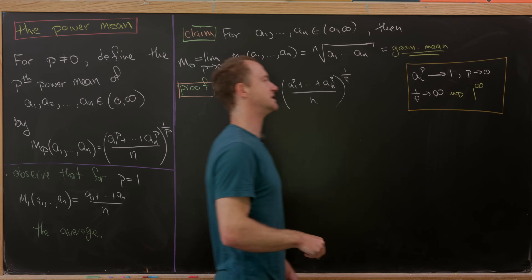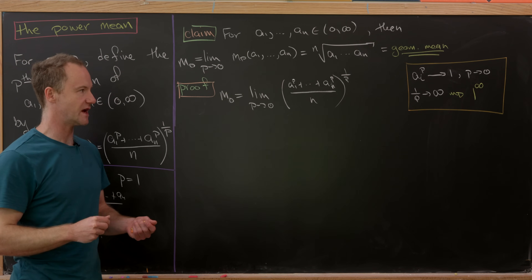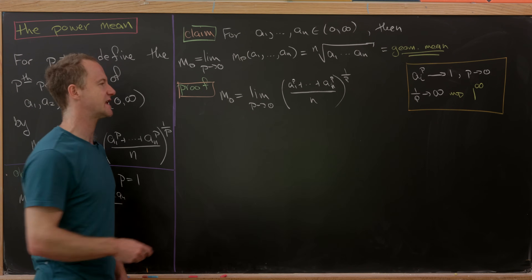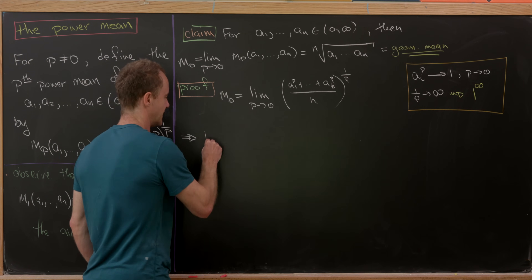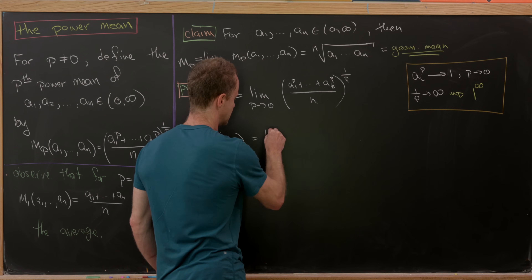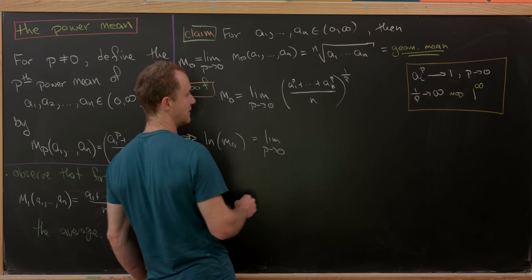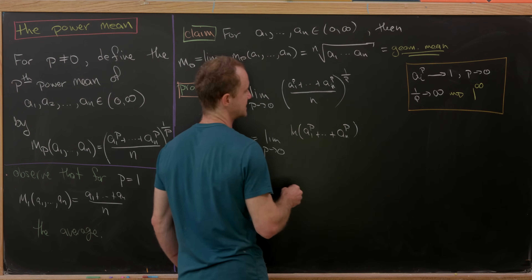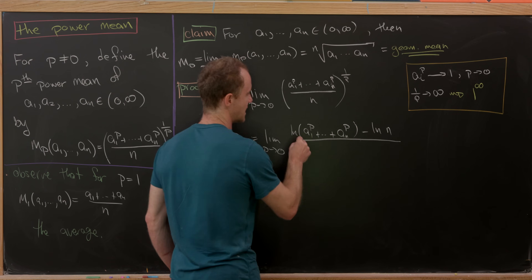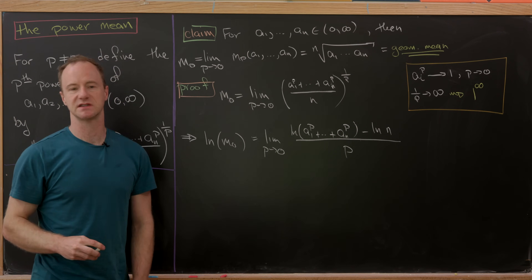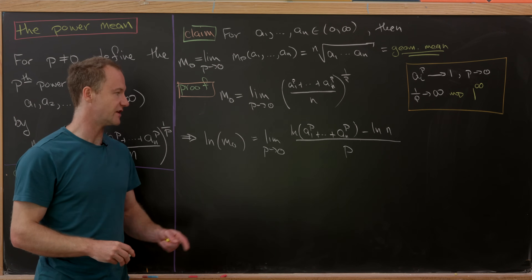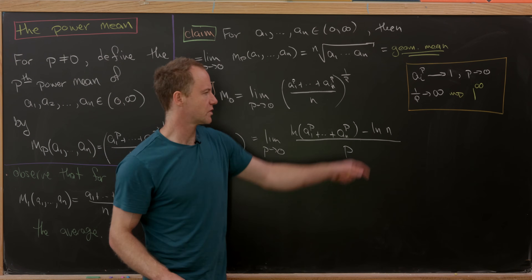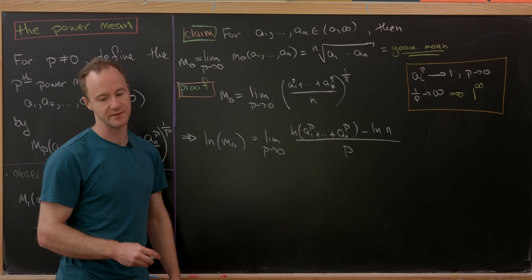The way to handle exponential indeterminate forms is by using L'Hôpital's rule after taking a logarithm. So we take the natural log: ln(m₀) = lim_{p→0} [ln(a₁^p + ... + aₙ^p) − ln(n)] / p, using logarithm rules. As p→0, the argument of the log goes to ln(n), and we subtract ln(n), giving us an indeterminate form of type 0/0.